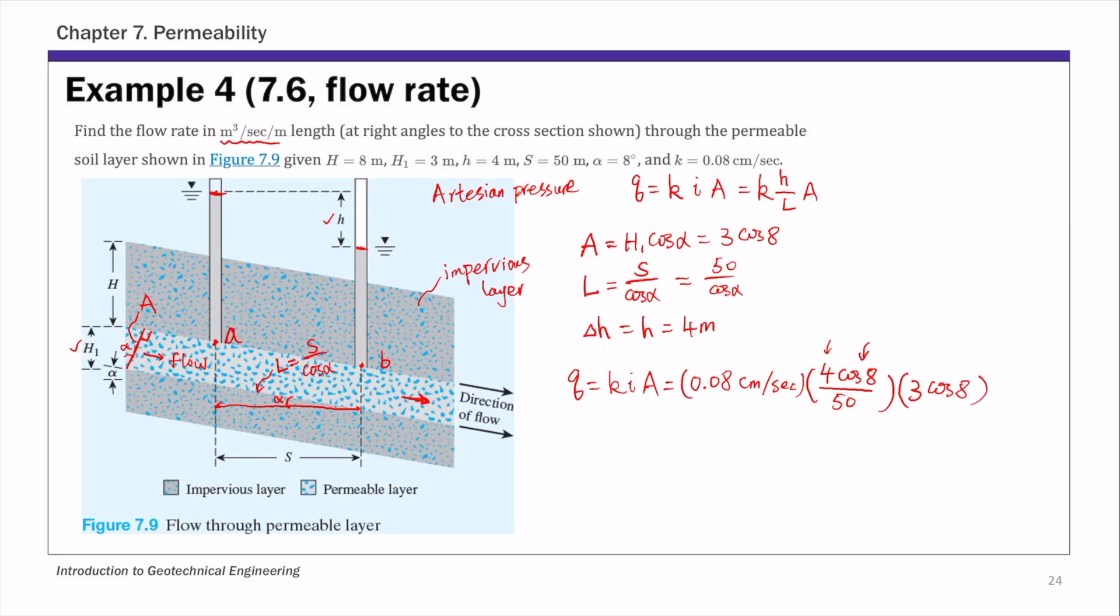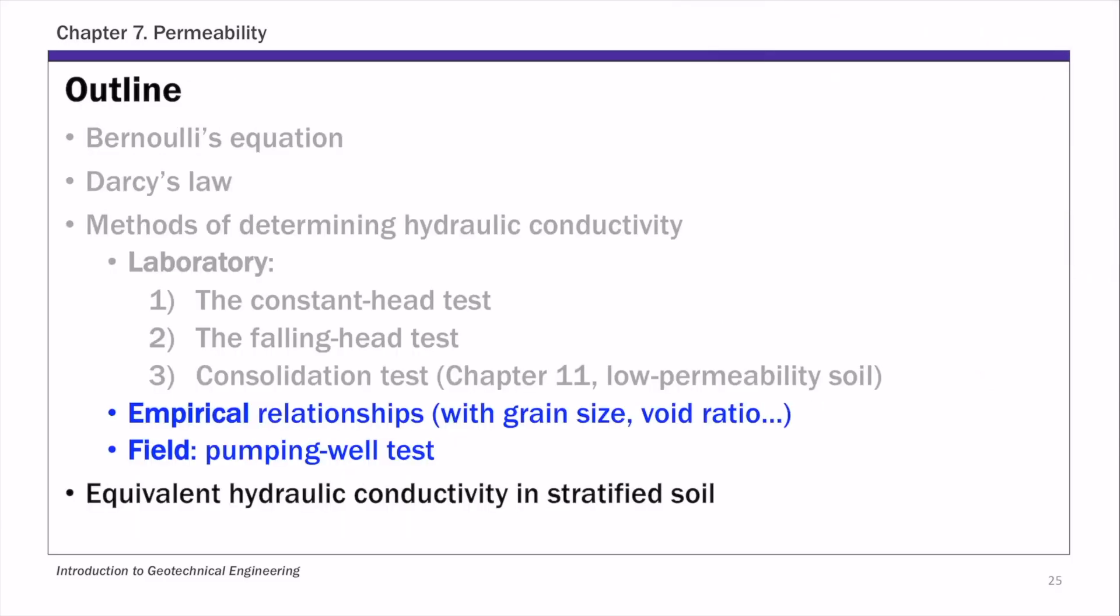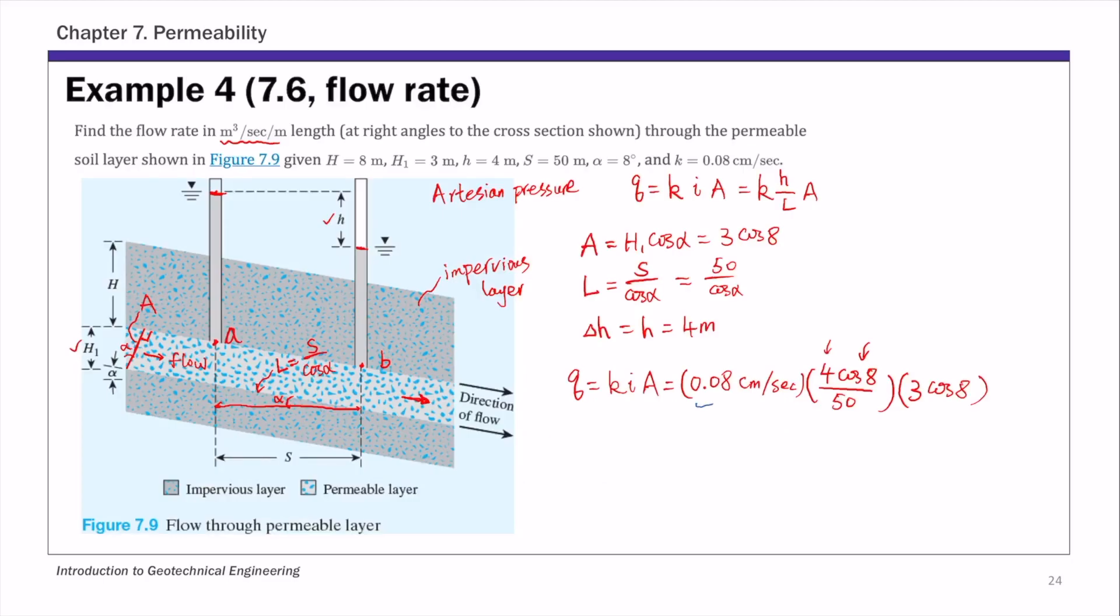And then if you substitute all the numbers here, so the only thing we need to pay attention to is to convert this centimeter, convert this centimeter per second to meter per second. So this will be 0.08 times 10 to negative 2 meters per second. So if you convert everything into meters, and then the flow rate is 0.19 times 10 to negative 3 meter cubed per second per unit width meter. So that is the flow rate for this example here.